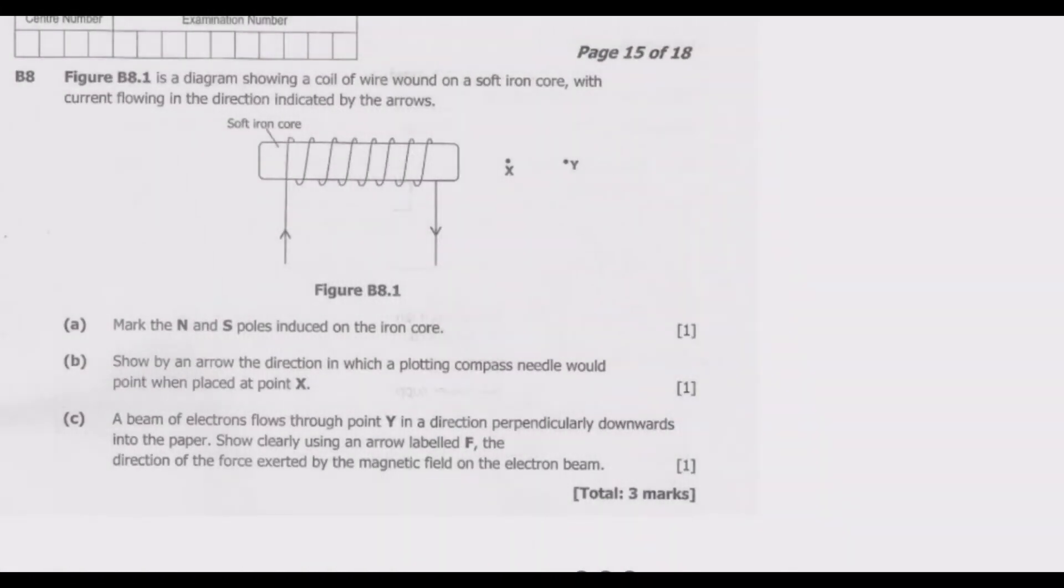Welcome viewers to another episode on A-level G12 exams. In this episode, we continue looking at the 2020 science paper 1, the November paper. Let's look at question B8. Figure B8.1 is a diagram showing a coil of wire wound on a soft iron core with current flowing in the direction indicated by the arrows.